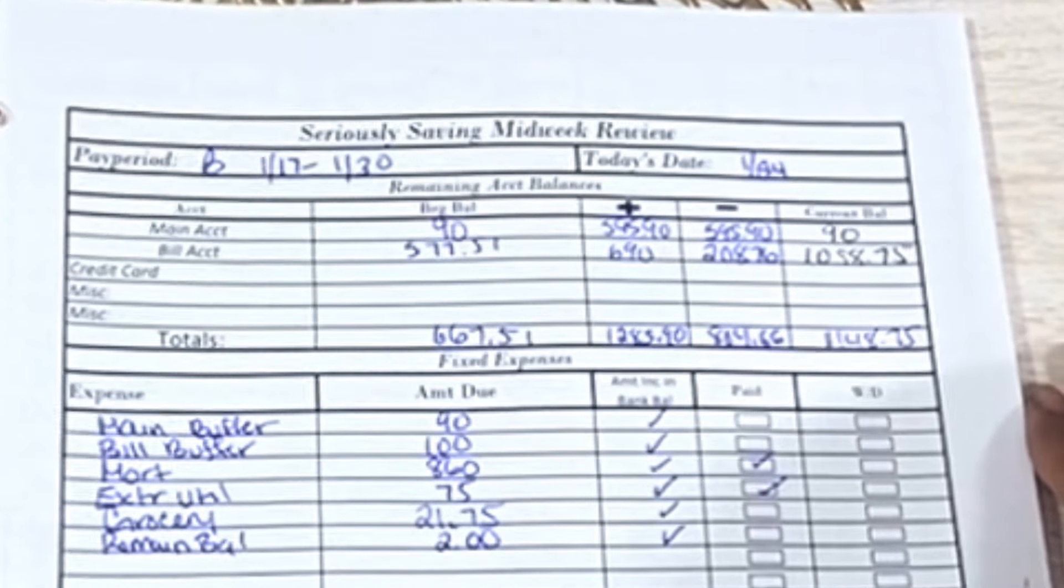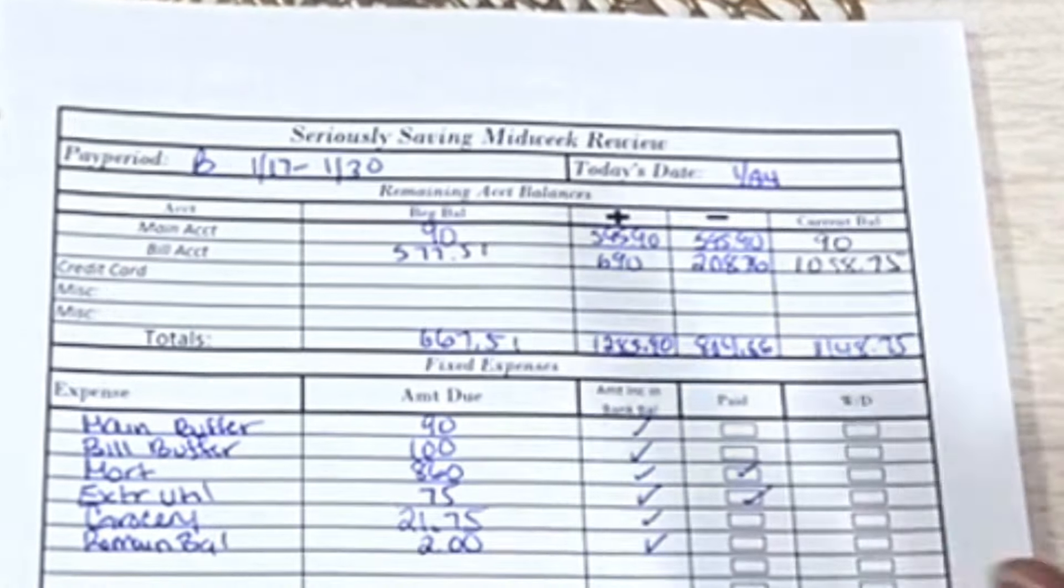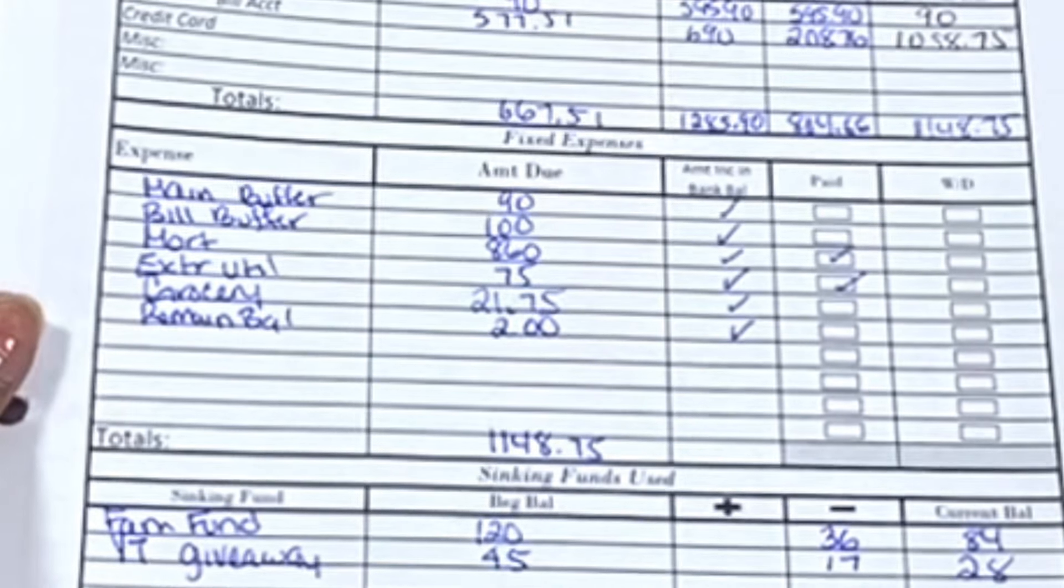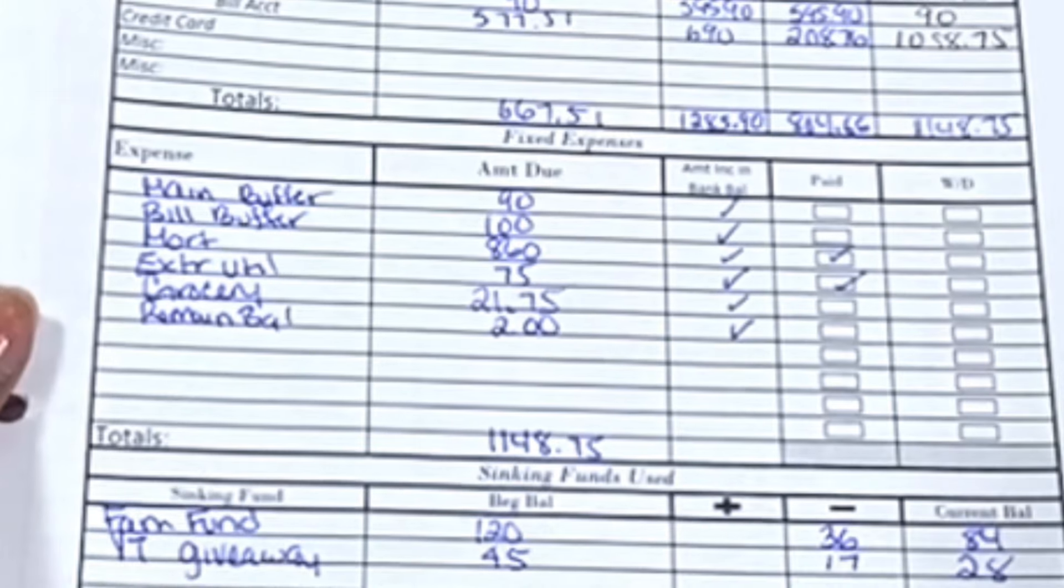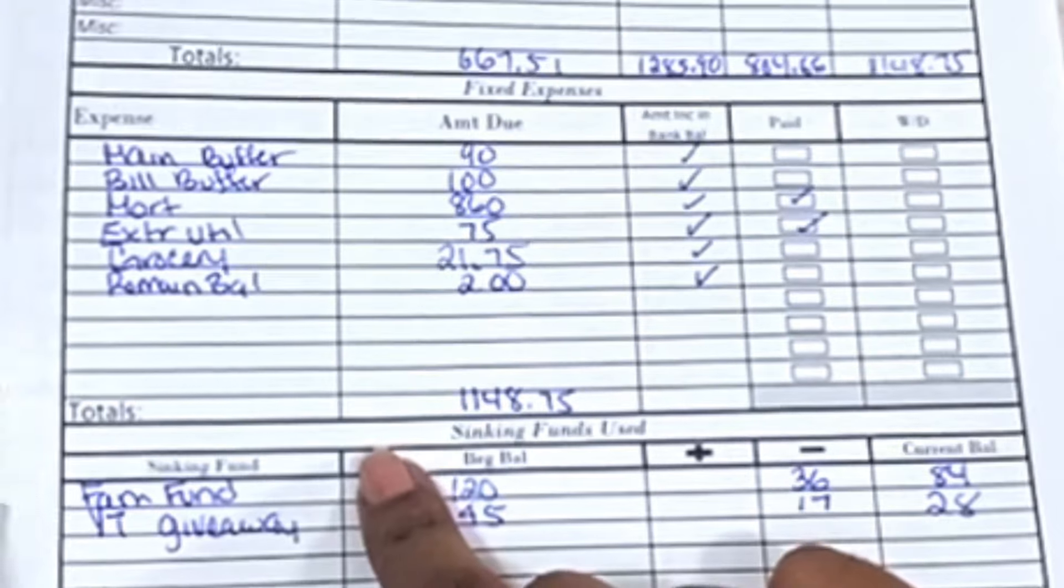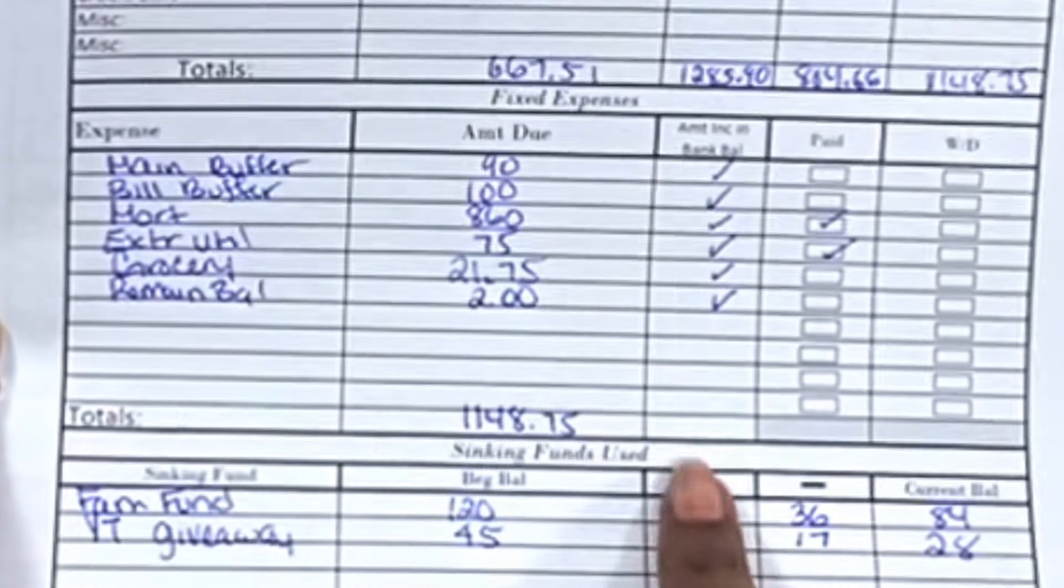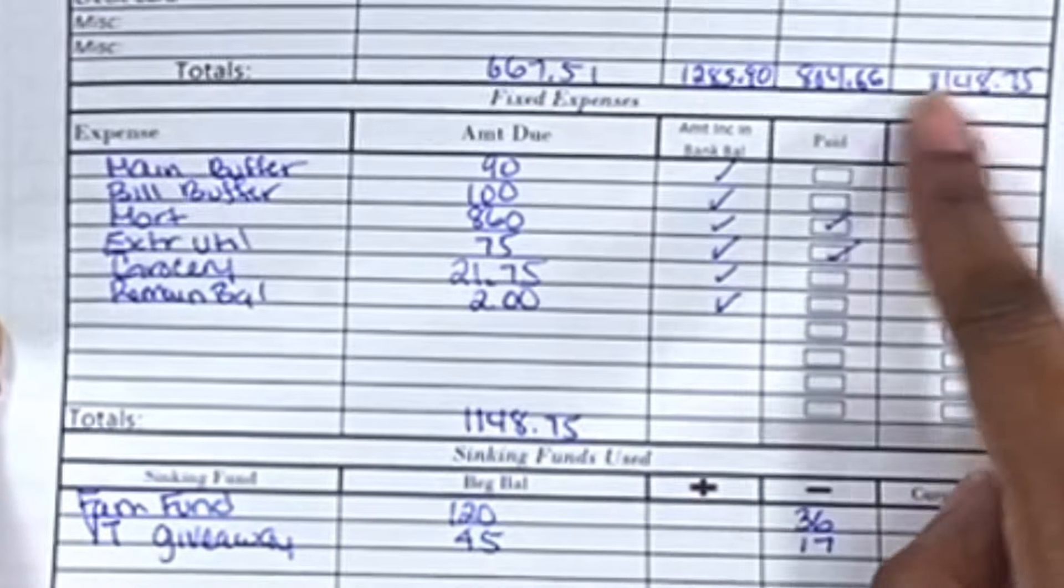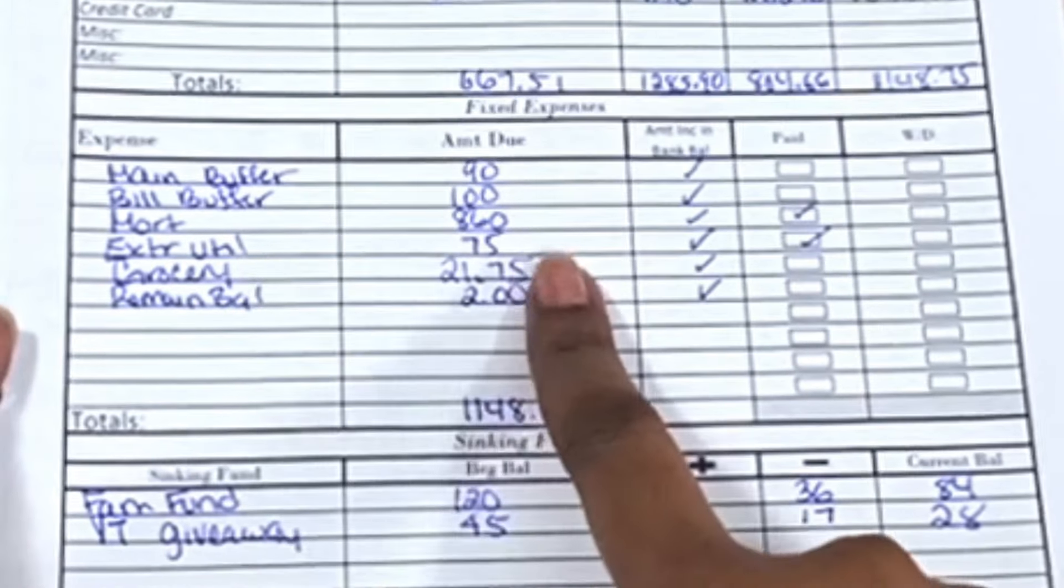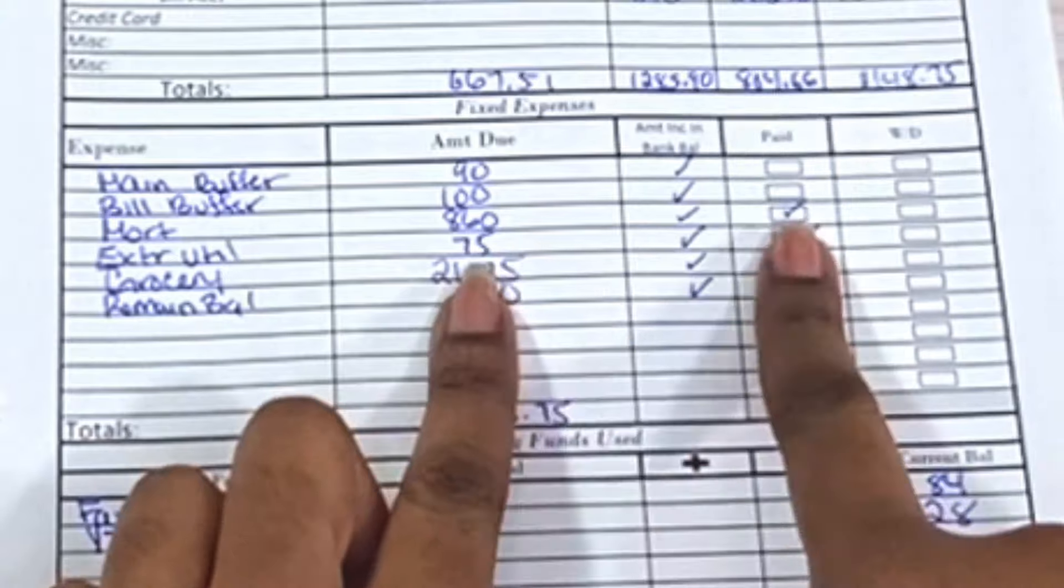So right now, starting with $667.51 at the beginning of the pay period, we got paid, we spent $804.66, and we have $1,148.75 left in the bank account. Now here are the fixed expenses that are still waiting to either be paid or withdrawn. The buffers we keep in there: $90 in the main account and $100 in the bill buffer. So we want to make sure this goes down to zero to make sure all of this gets accounted for, and it looks like it has.